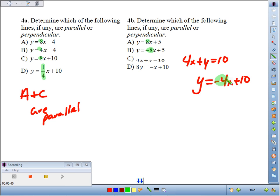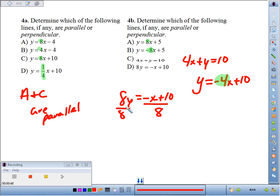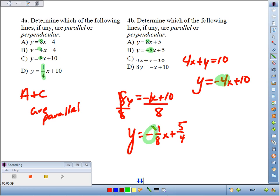And line D: 8y equals negative x plus 10. To get y by itself, I divide by 8 and I get y equals now negative 1 divided by 8, I've got negative 1/8 x plus 10/8, that reduces to 5/4. So the slope, now that I've got y by itself, I can see it's negative 1/8.